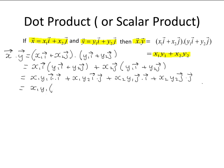Now the dot product of i with i is 1 as we've previously discussed. Plus x1y2 the dot product of i with j as they're perpendicular is 0.